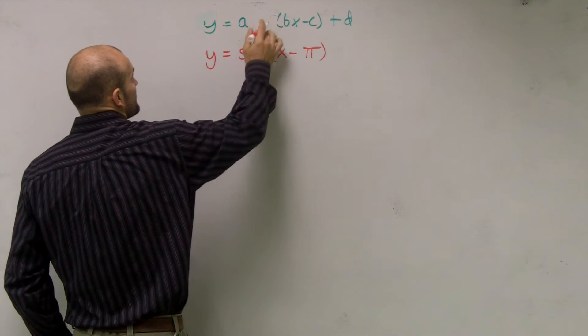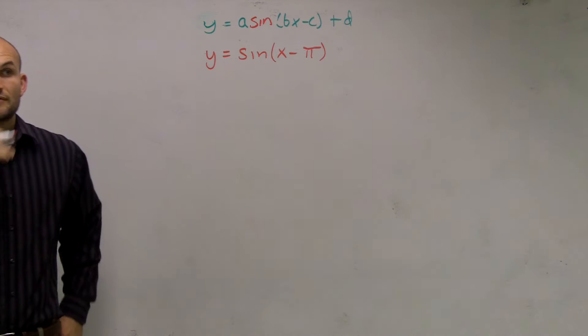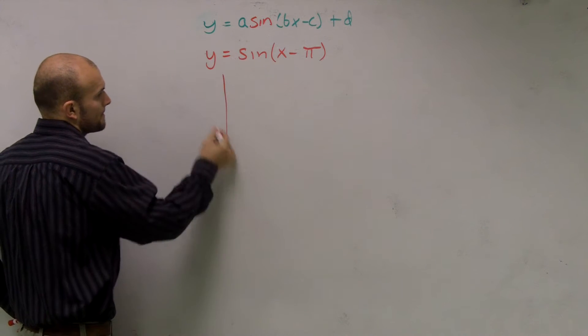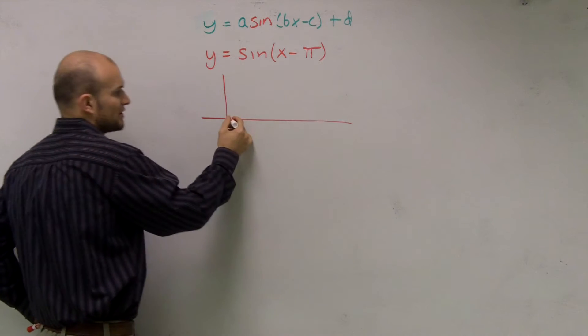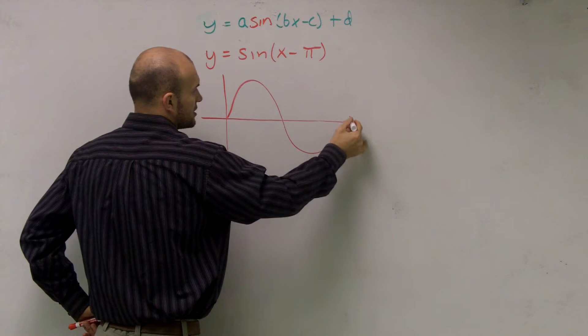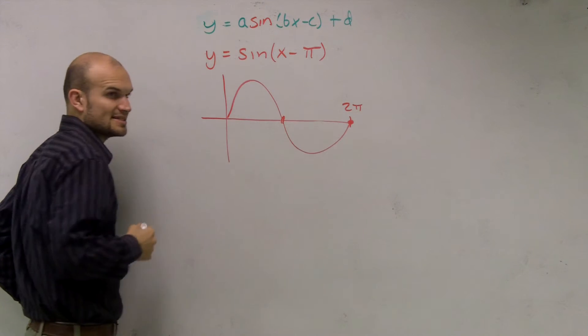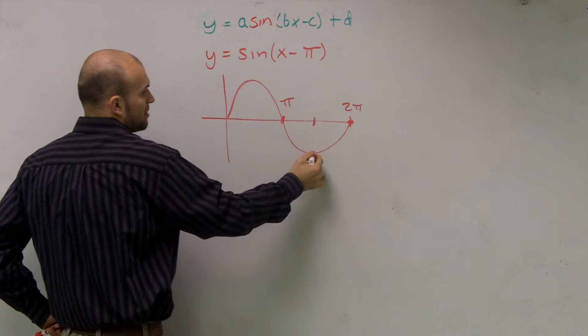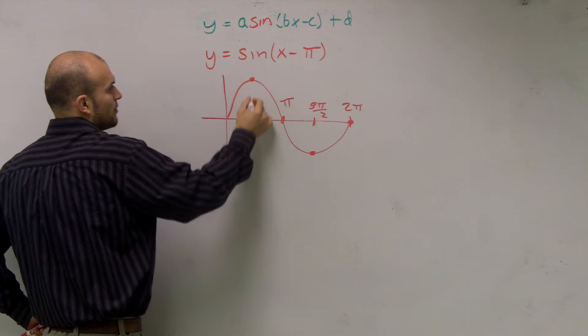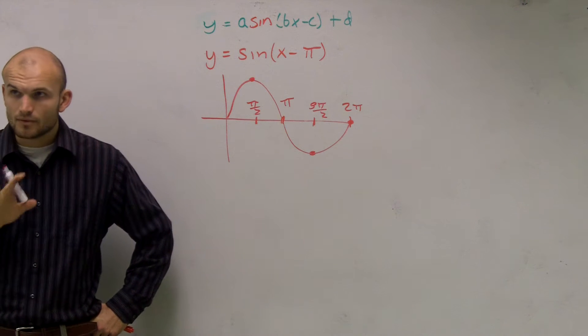If you guys can remember, when we're dealing with the graph of this equation, the graph of sine completes one period at 2π, right? It has its x-intercept at π, its minimum point at 3π over 2, and its maximum point at π over 2, right?